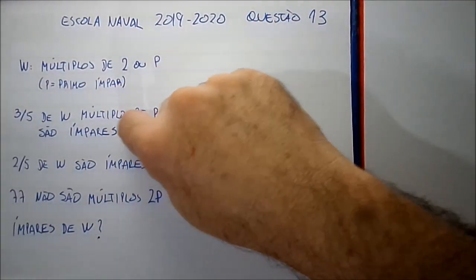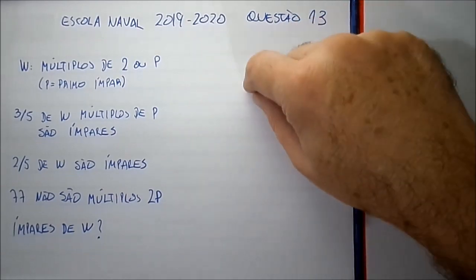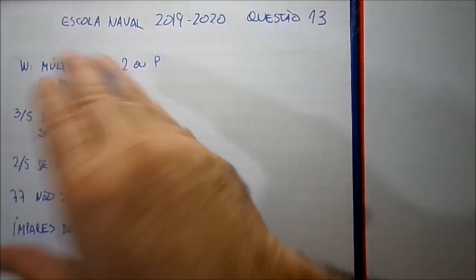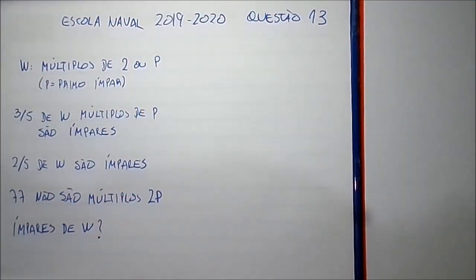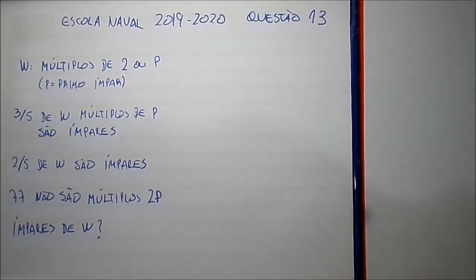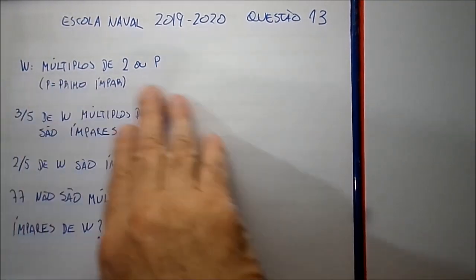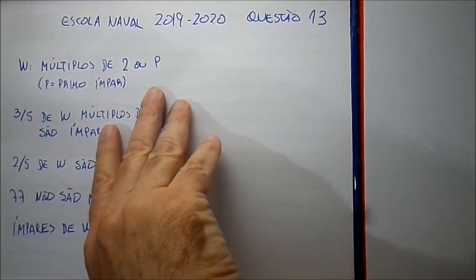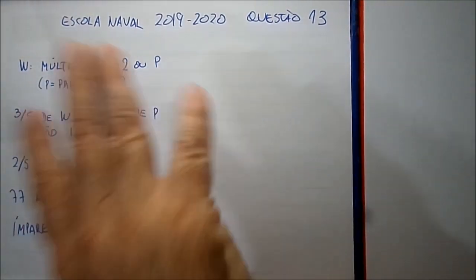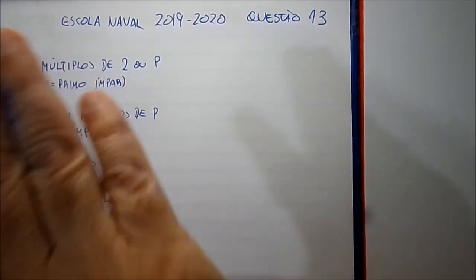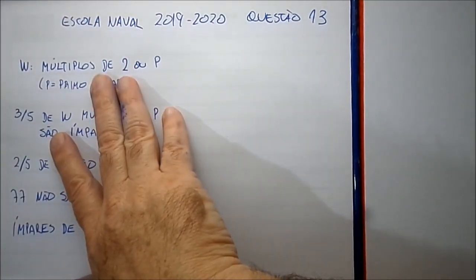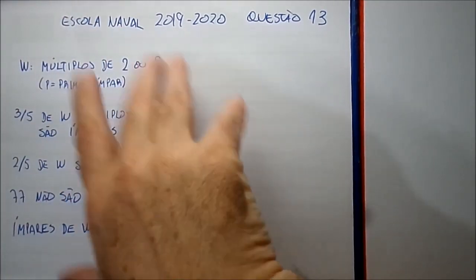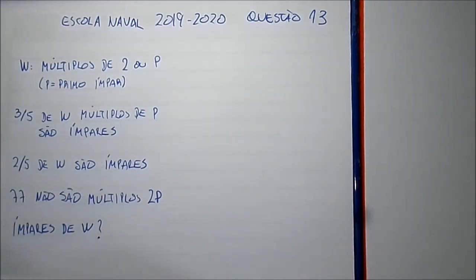Pode ter 2, 10, 20, 24 — não precisa ter 2, 4, 6 direitinho. A mesma coisa para os múltiplos de P. Porque ele não falou uma sequência completa; apenas falou que é um conjunto de múltiplos de 2 ou P.